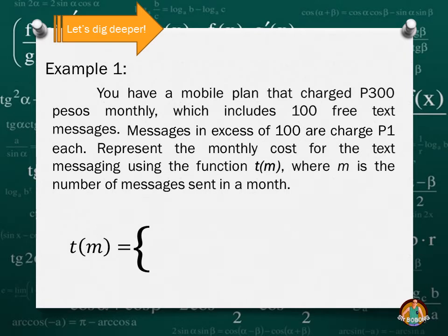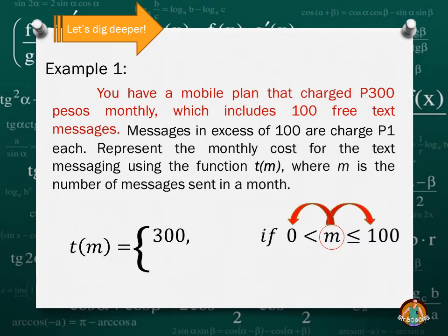Let's have T(M) equals first equation. We have, notice that we have our first condition. You are charged 300 pesos monthly, which already includes the 100 free text messages. Therefore, we have this. Now notice that our M here or the text messages here is greater than 0 or less than or equal to 100. So it means if your M is greater than 0 or less than or equal to 100, you will pay 300 monthly. That's the basic or the standard.